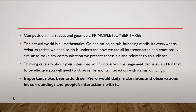Compositional narratives and geometry. Principle number three. The natural world is all mathematics — golden ratios, spirals, balancing motifs, it's everywhere. When as an artist we need to understand how we are all interconnected and emotionally similar, to make any communication we present accessible and relevant to an audience. Thinking critically about your intentions will inform your arrangement decisions, and for that to be effective you will need to observe life and its interaction with its surroundings.